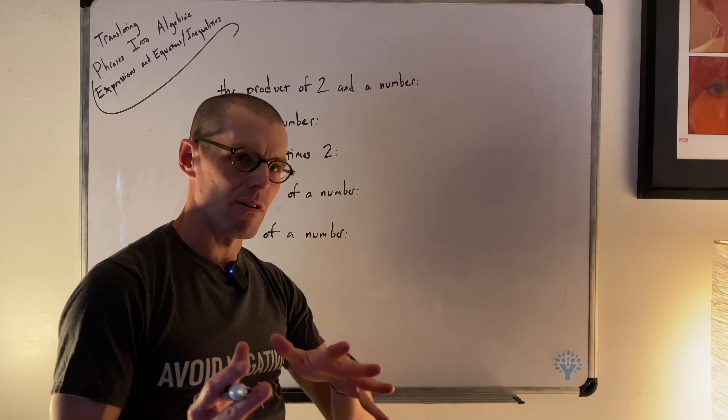'At least' means you have an inequality. At least six means six or more — it could be six, seven, eight, a hundred. So 'at least' packs two things: it could equal six, or be more than six. That means x minus two is greater than or equal to six. 'Two less than a number is at least six' becomes x minus two ≥ 6.